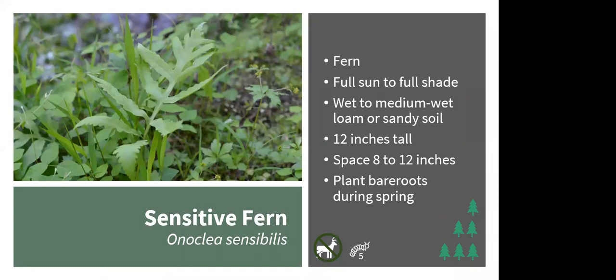Sensitive fern has a different look than many other ferns — wide fronds rather than delicate intricate patterns. It does well as long as it doesn't encounter long periods of drought, and you can grow it in full sun to full shade. It spreads slowly through rhizomes. Plant bare roots in spring. It's deer resistant and supports 5 caterpillar species. It gets its name because it often dies back after the first frost of the year.